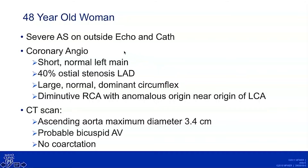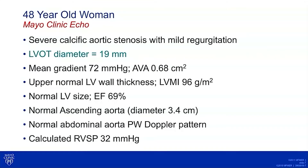Severe AS was found on her echo, and she had a little bit of stenosis in her LAD and a diminutive right coronary artery with an anomalous origin near the origin of her left coronary artery. Her maximum aortic diameter was 3.4 cm, and her valve, although heavily calcified, was probably bicuspid — difficult to assess with that degree of calcification — and no coarctation. She was sent urgently to Mayo for surgical consultation. At arrival, our echo showed an LVOT diameter of 19 mm, mean gradient of 72 mmHg, and valve area of 0.68.